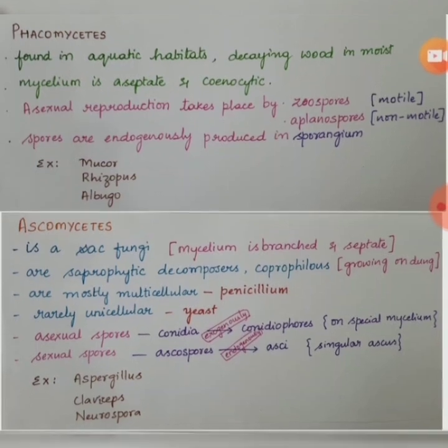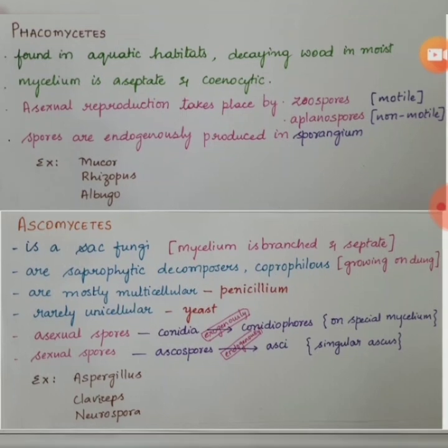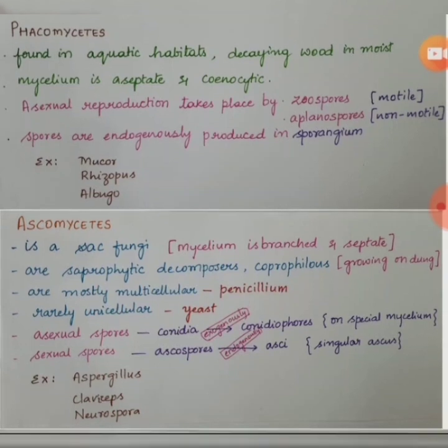'Copro' means dung while 'philous' means loving. Ascomycetes are mostly multicellular — for example, Penicillium — and are rarely unicellular, for example yeast.